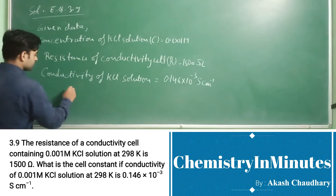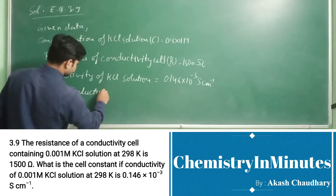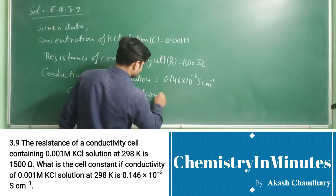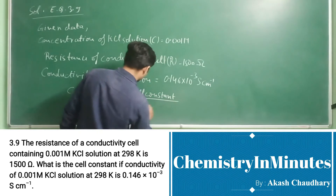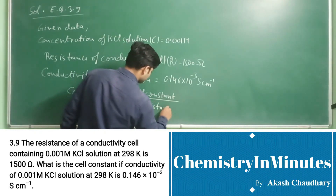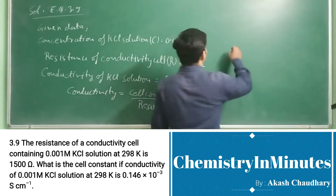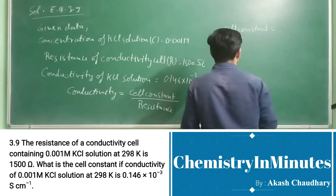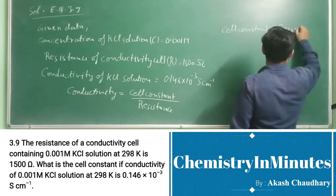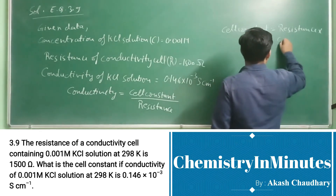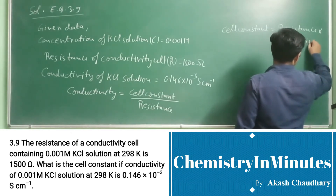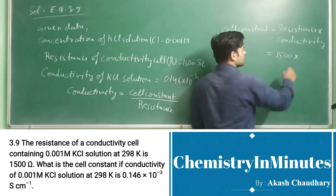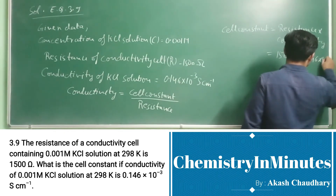Using the relation: conductivity equals cell constant upon resistance. From here we can write cell constant equals resistance multiplied by conductivity. Now, putting in the values: resistance is 1500 Ohm multiplied by conductivity 0.146 × 10⁻³.